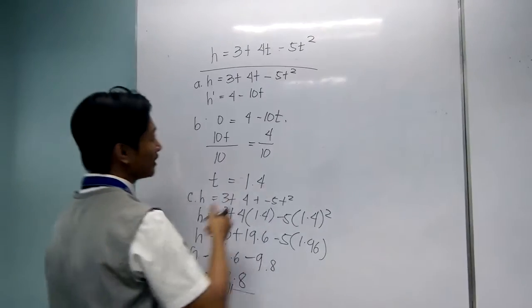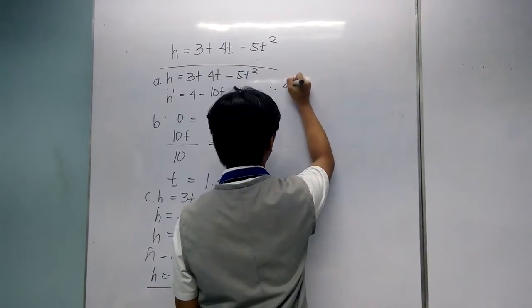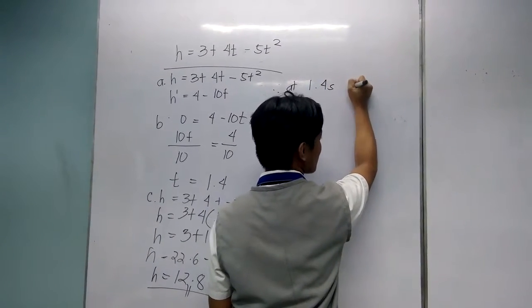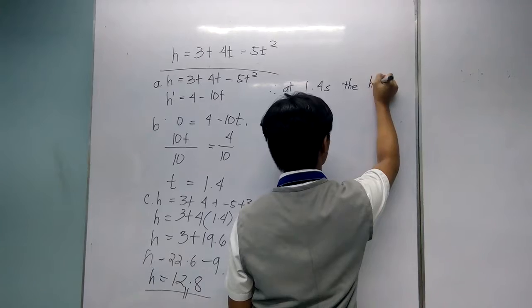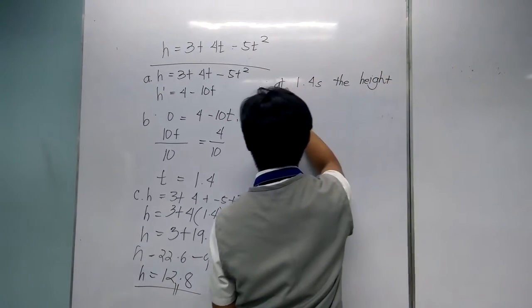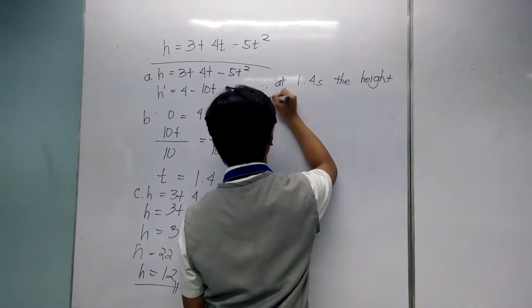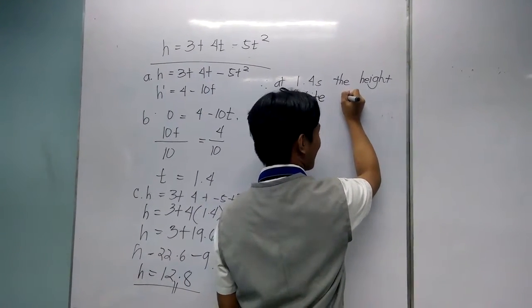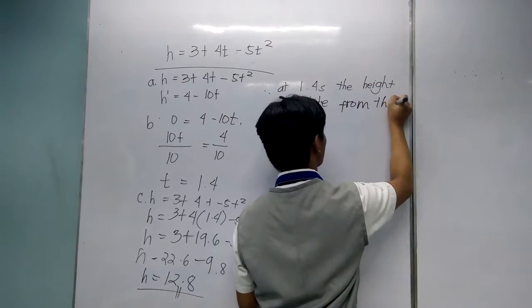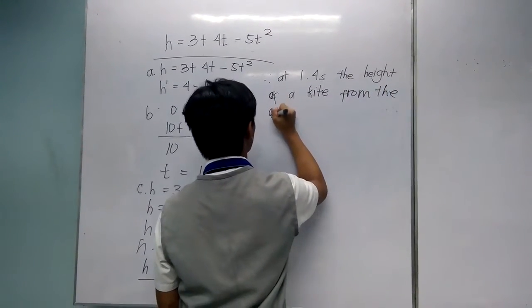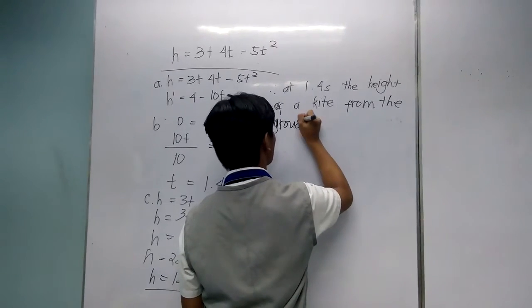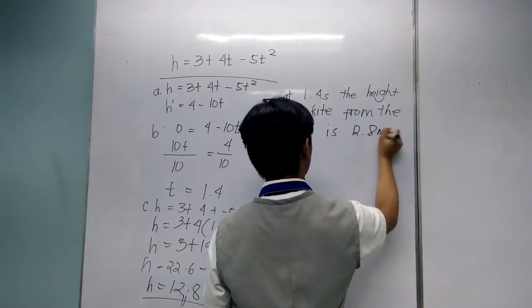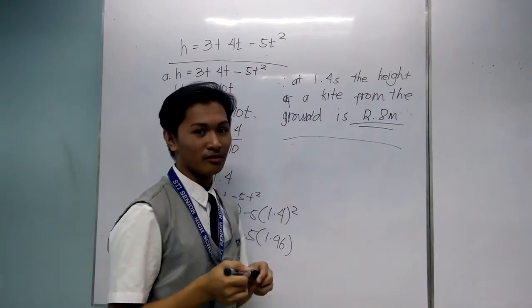Therefore, at 1.4 seconds, the height of the object from the ground is 12.8 meters. And this is the answer to the problem. Thank you.